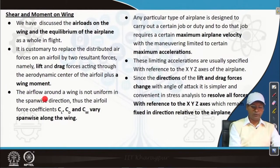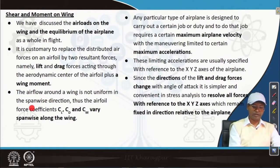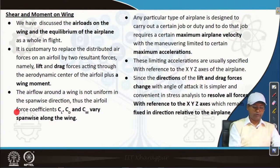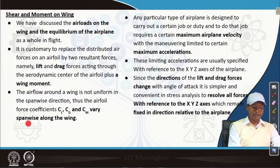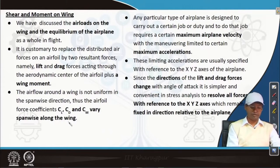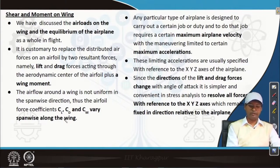The flow around a wing is not uniform in the spanwise direction. Thus, the airfoil force coefficients CL, CD, and CM vary spanwise along the wing. CL varies, lift varies, CD varies, drag varies, and moment also varies from root to tip along the span.